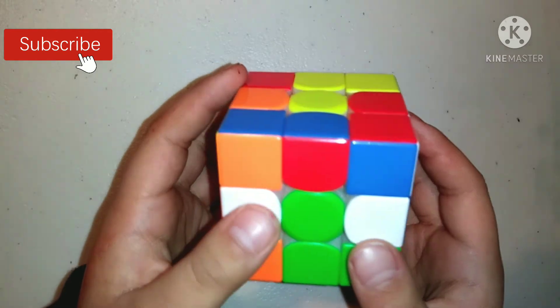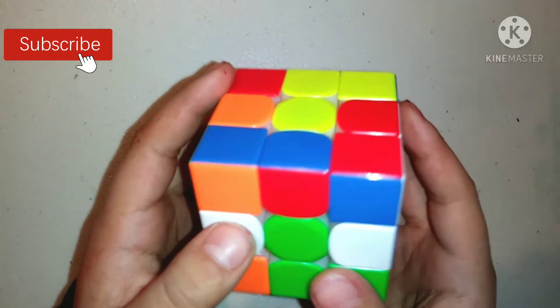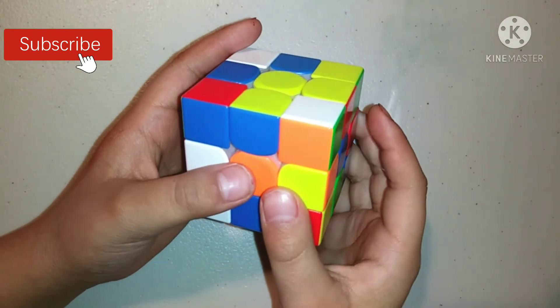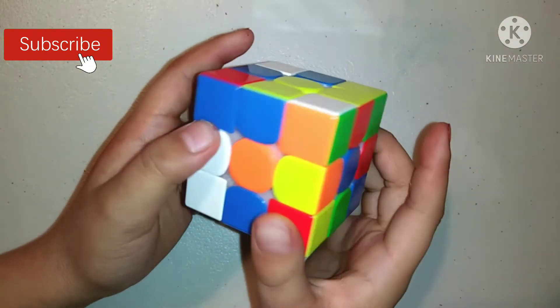You are not going to be turning the cube. You're just going to be seeing what you're going to do to make the white cross. After you know what you're going to do, you can start the timer and start solving the cube.